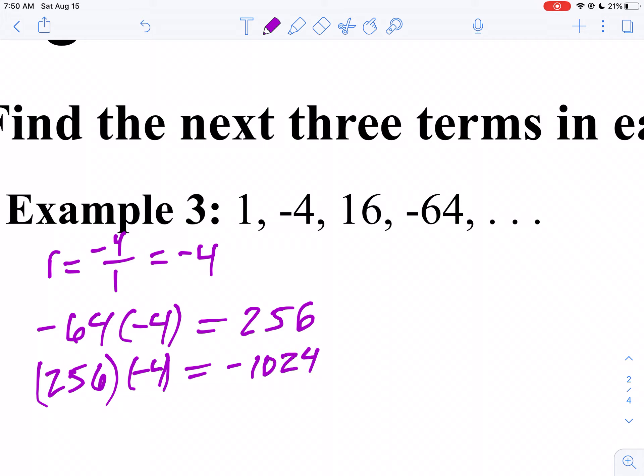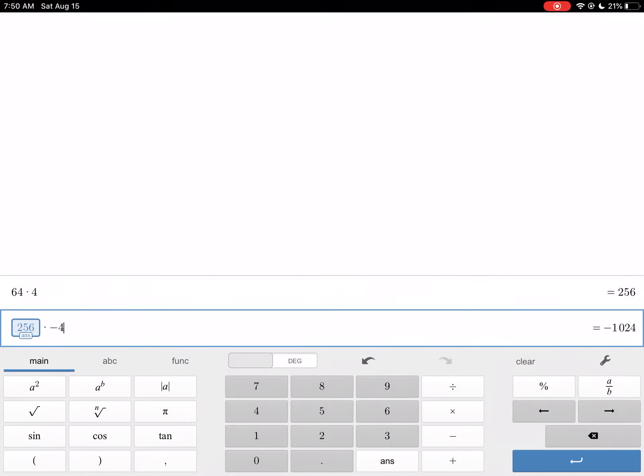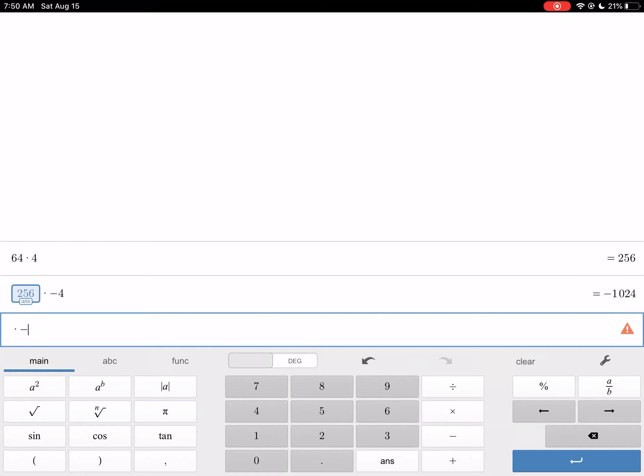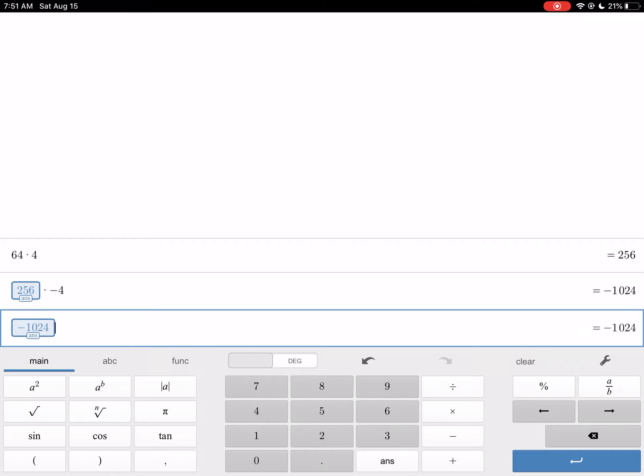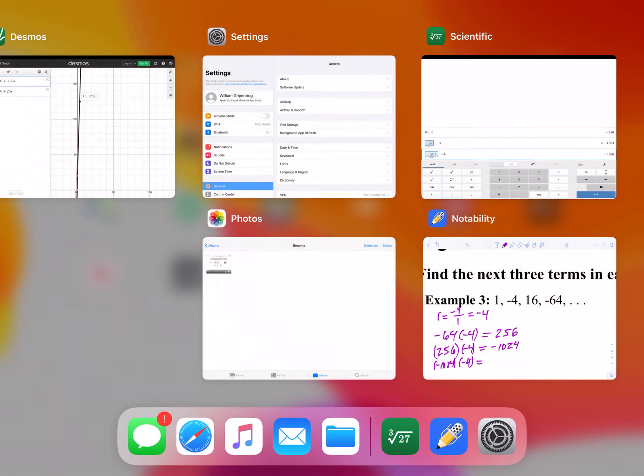To find the third term, we take negative 1024 times negative four, and we get 4,096.